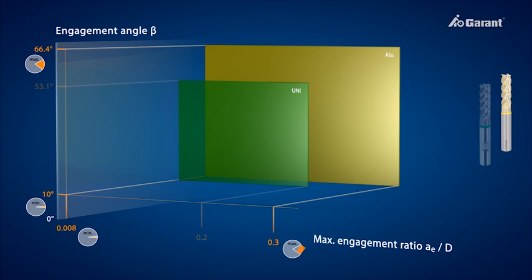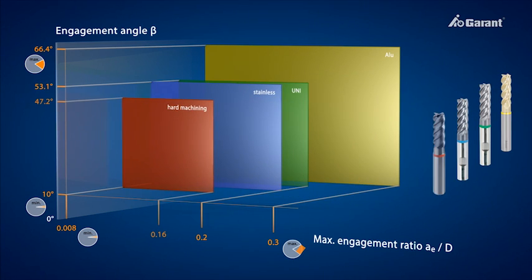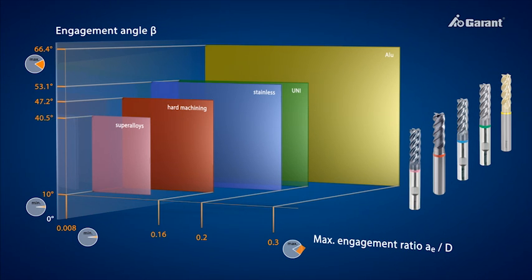Other ranges apply to uni, stainless, hard machining and superalloys, for which the optimum range lies between 10 degrees and 40.5 degrees. That corresponds to an engagement ratio of 0.008 to 0.12.